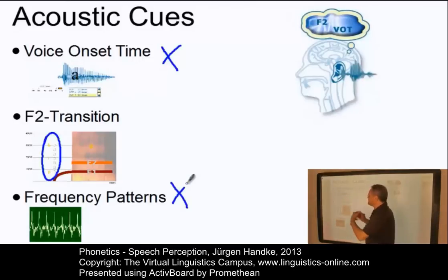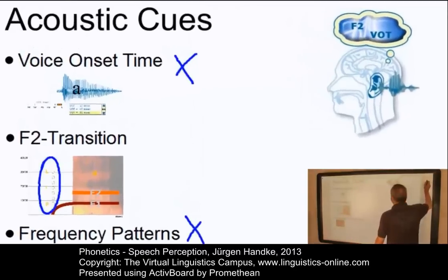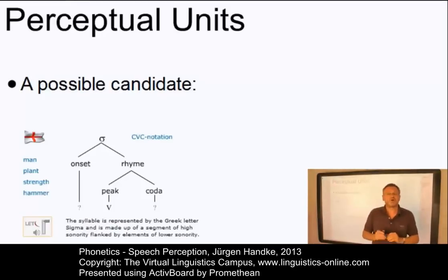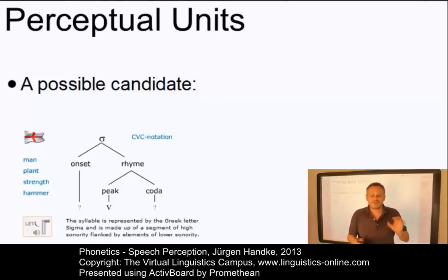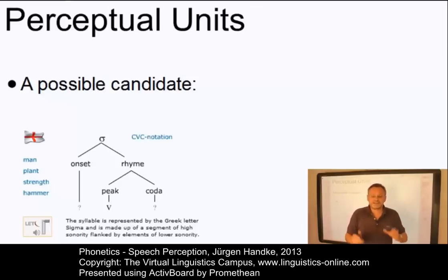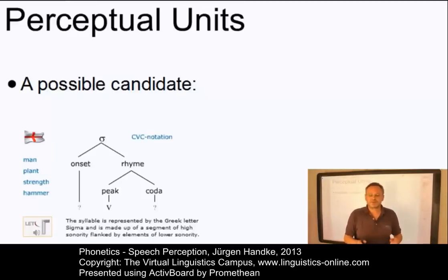Studies into language acquisition, especially into infant speech processing, suggest that the fundamental unit of speech perception corresponds roughly to the syllable. The central argument is the unavailability of obvious cues that facilitate the segmentation process. Despite the absence of such cues, children are capable of acquiring their lexicon even though they have little or no information about the phonological properties of the words. Hence, they must process some sort of information — perhaps innate — about the properties that distinguish one word from another. This information seems to be based on the syllable.